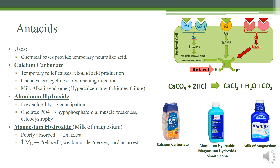Let's talk about antacids. This is just simple chemistry — they're chemical bases that temporarily neutralize the acid, targeting the hydrogens themselves. For example, calcium carbonate reacts with HCl to produce calcium chloride, which is neutral, water, which is neutral, and CO2, which is very slightly acidic. So overall you get a reduction in acid inside your stomach. This is only used for temporary relief, but what you can experience in a lot of patients is rebound acid, where your body overcompensates.